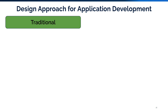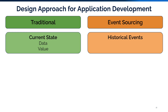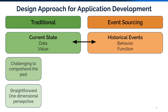For decades, the traditional design approach for business applications has centered on maintaining and updating the current state, its data, and its values. This is a simple approach and familiar to many developers. In contrast, the event sourcing design approach focuses on historical events, effectively capturing business actions. Event sourcing's emphasis on past events, behaviors, and functions starkly contrasts the traditional focus on current state, data, and value. With the current state approach, since it does not retain previous states, it is often challenging to comprehend the past. This results in a straightforward but one-dimensional perspective that fails to explain how and why you arrived at the current state of your data, and the business intentions behind it.